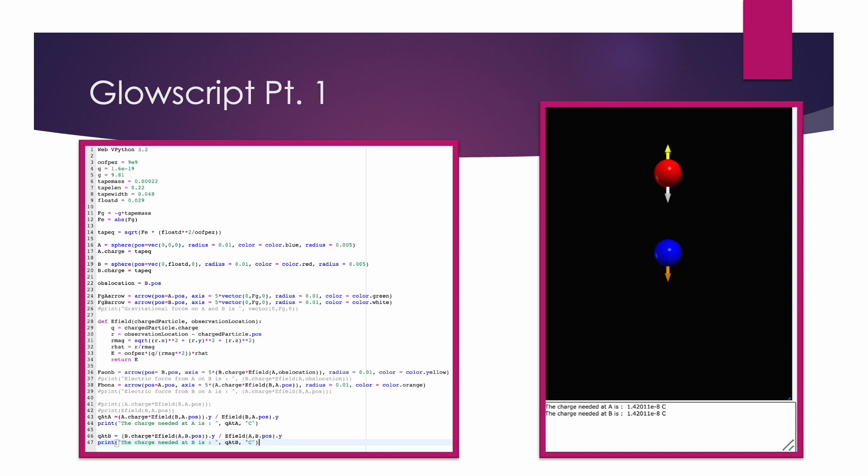I then used my electric field function to compute the electric force observed from tape A on tape B by multiplying the charge of B by the electric field observed at tape B from tape A, and did the same thing for the force of B on A. Finally, I estimated Q needed at A by dividing the electric force on A by the electric field observed at A, and did the same thing for B. As predicted, the model found the same answer as my hand calculations, with a charge needed of 1.42 times 10 to the negative 8 Coulombs.